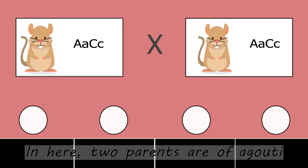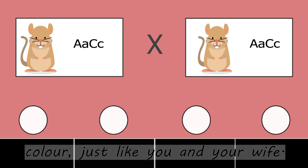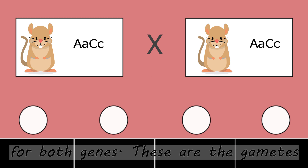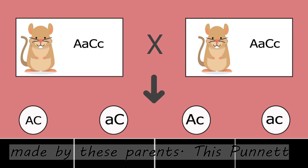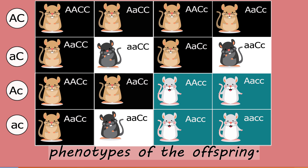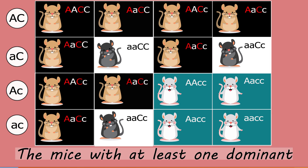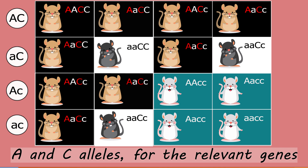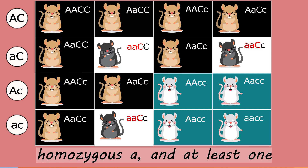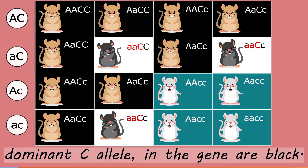I will further explain this using this Punnett square. In here, two parents are agouti color, just like you and your wife. They are considered as heterozygous for both genes. These are the gametes made by these parents. This Punnett square shows possible genotypes and phenotypes of the offspring. The mice with at least one dominant A and C allele for the relevant genes are agouti.